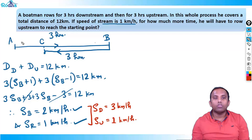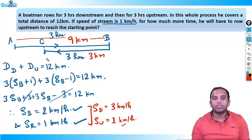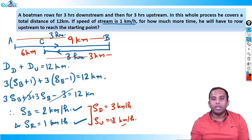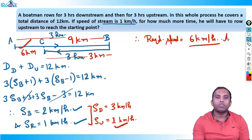In downstream speed, if we drove for 3 hours: 3 into 3 = 9 km total covered going downstream. Upstream speed is 1 km per hour, and he rows for 3 hours, so in 3 hours he covers 3 km coming back. That means he still has 6 km more to go, and the upstream speed is 1 km per hour. So he has to cover 6 km at the speed of 1 km per hour.